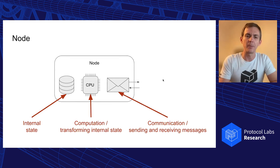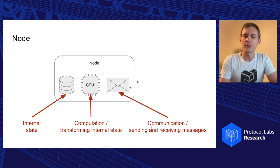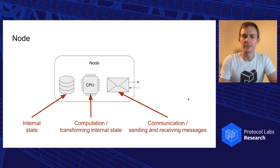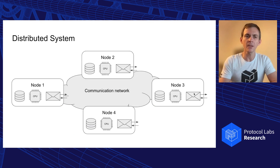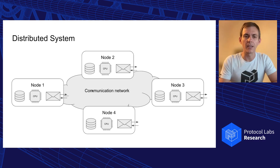So first, just to be on the same page: what is a node? A node is some entity that has some internal state. It can perform computation on that internal state and transform it. It can also communicate with other nodes using message passing — through sending and receiving messages. A distributed system is just a collection of nodes that can communicate through some communication network, again just through sending messages to each other.